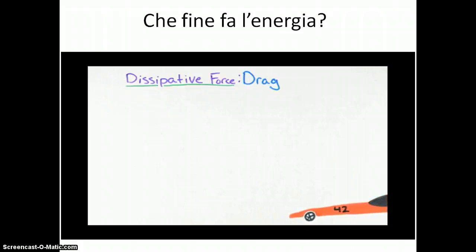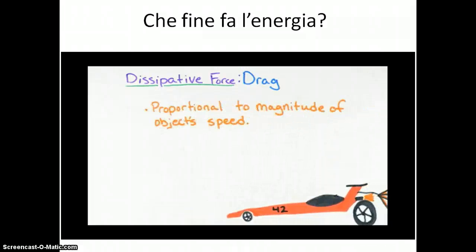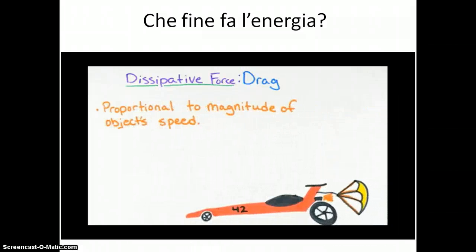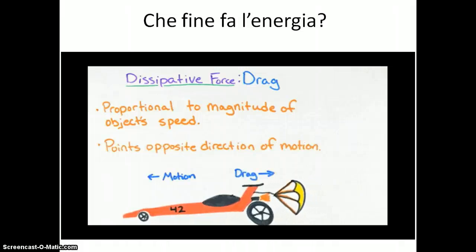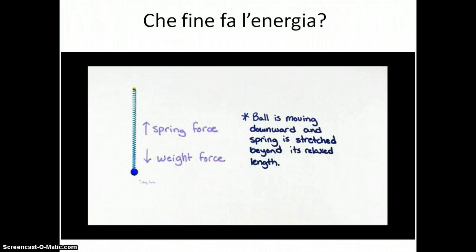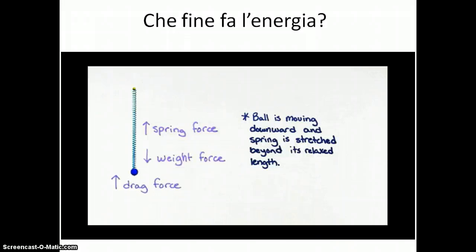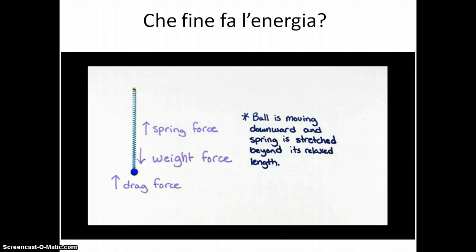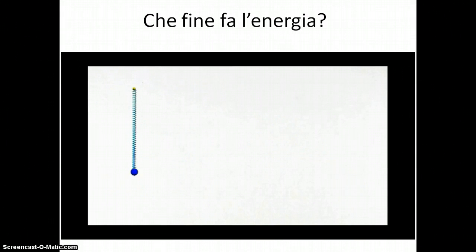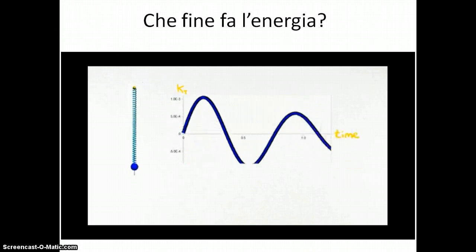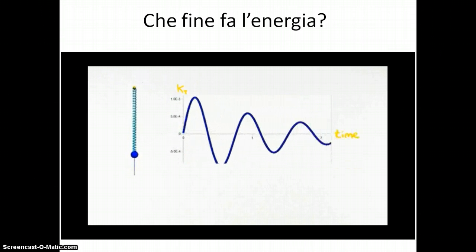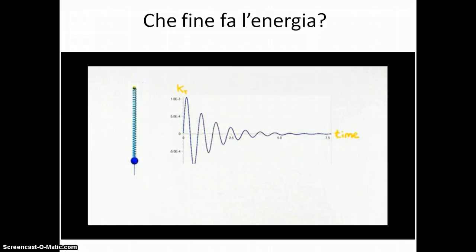Recall that one way we could model drag is as a force that is proportional to the magnitude of the object's speed and oppositely pointed to the direction of the object's motion. Let's say we add this force into our spring-mass model, so that there are three forces acting on the mass: the weight force, the spring force, and the drag force. Here's what the motion would look like for some choice of drag coefficient B. We see that while the mass starts out with some kinetic energy, after some time it comes to rest. Again, we say that the energy was dissipated, in this case by the drag force.